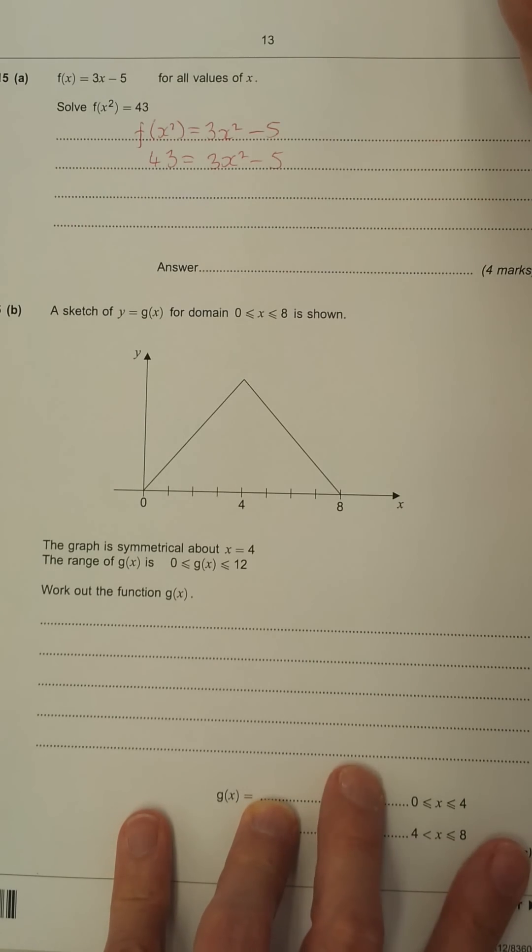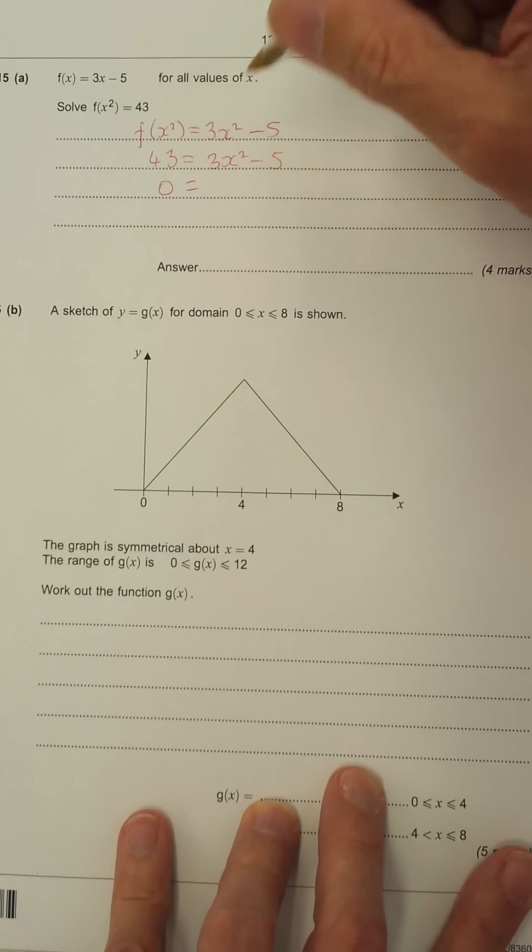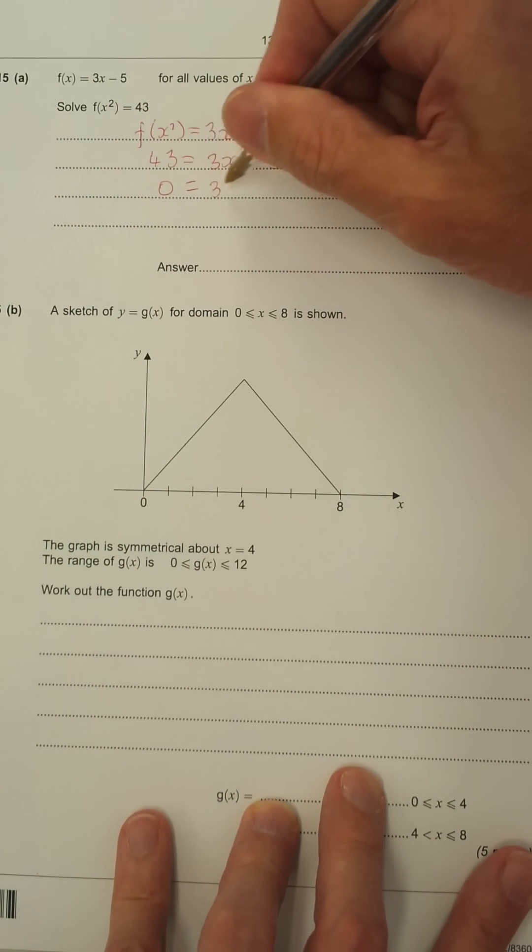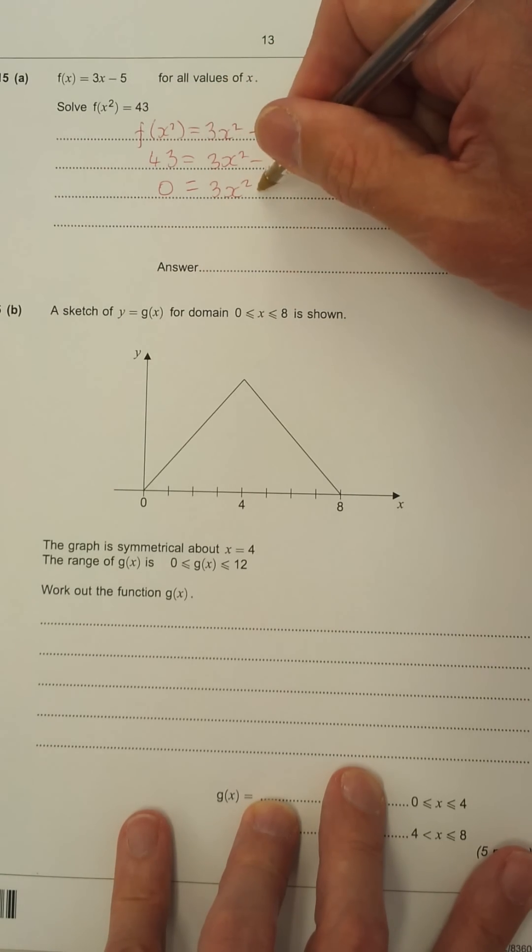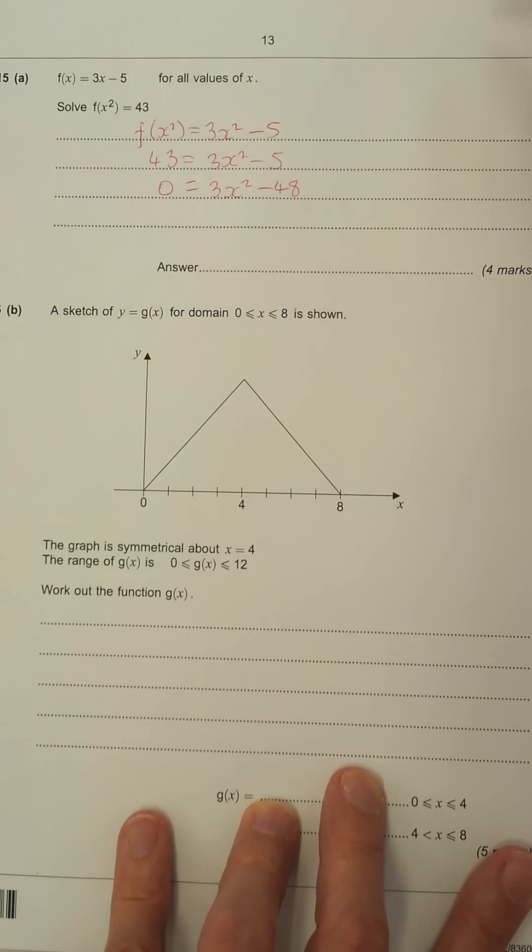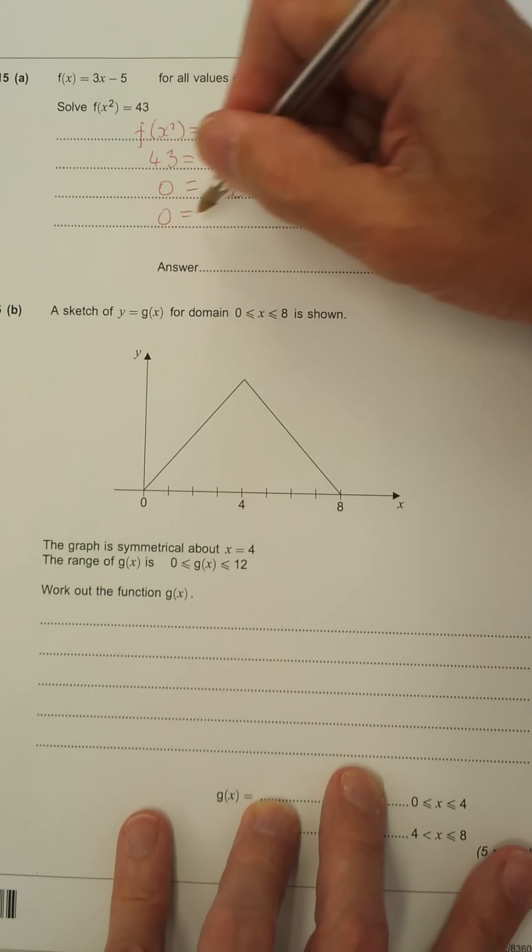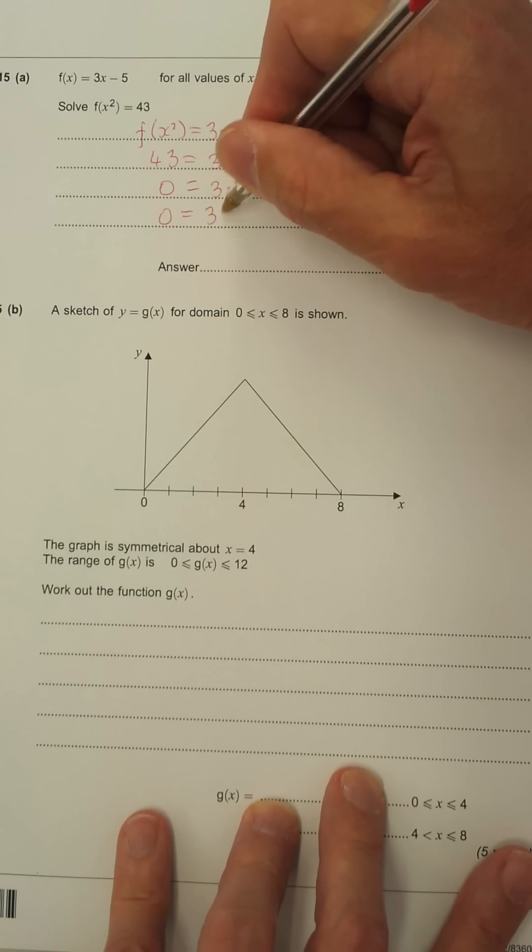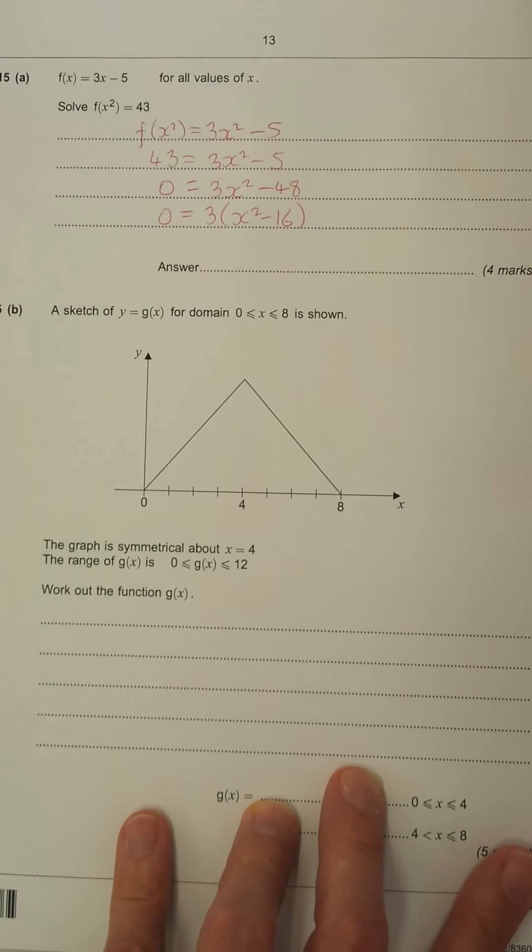Now all we need to do is solve this. It's a quadratic, so we'll make this equal to 0. Take the 43 over. So we've got 3x squared minus 5 minus another 43 is minus 48. Factorize the 3 out. So we've got 0 equals 3x squared minus 16. Because 3 goes into 48 16 times.